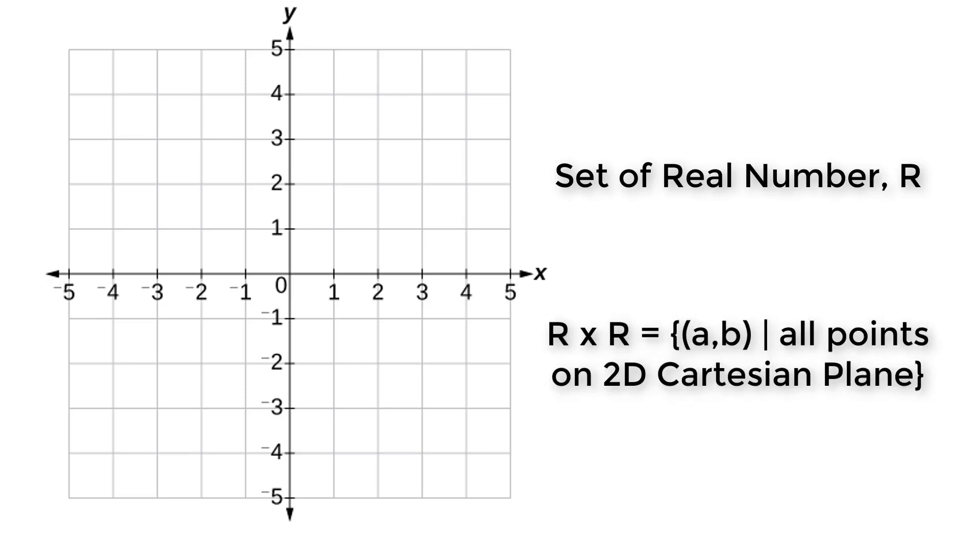Now if we take cross product of set of real numbers, then we will get all of the points of this 2D Cartesian plane.